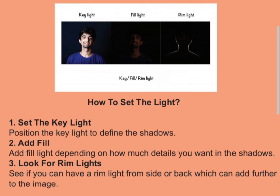So how do you set up the lights? First, set the key light — position it to define the shadows. Second, add fill light depending on how much detail you want in the shadows. Third, look for rim lights — see if you can have a rim light from the side or back, which can add further depth to the image.